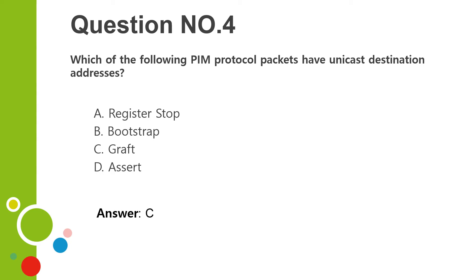Question number four. Which of the following PIM protocol packets have unicast destination addresses? A. Register stop. B. Bootstrap. C. Graft. D. Assert. Answer: C.